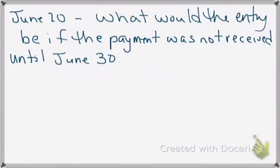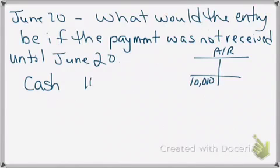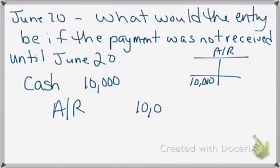On June 20th, what happens if they didn't pay on the 9th and waited until the 20th? Then the discount period has passed, so they owe the full ten thousand dollars. I would receive cash of ten thousand dollars, and their accounts receivable would be paid off. That is the journal entry for paying outside the discount period.